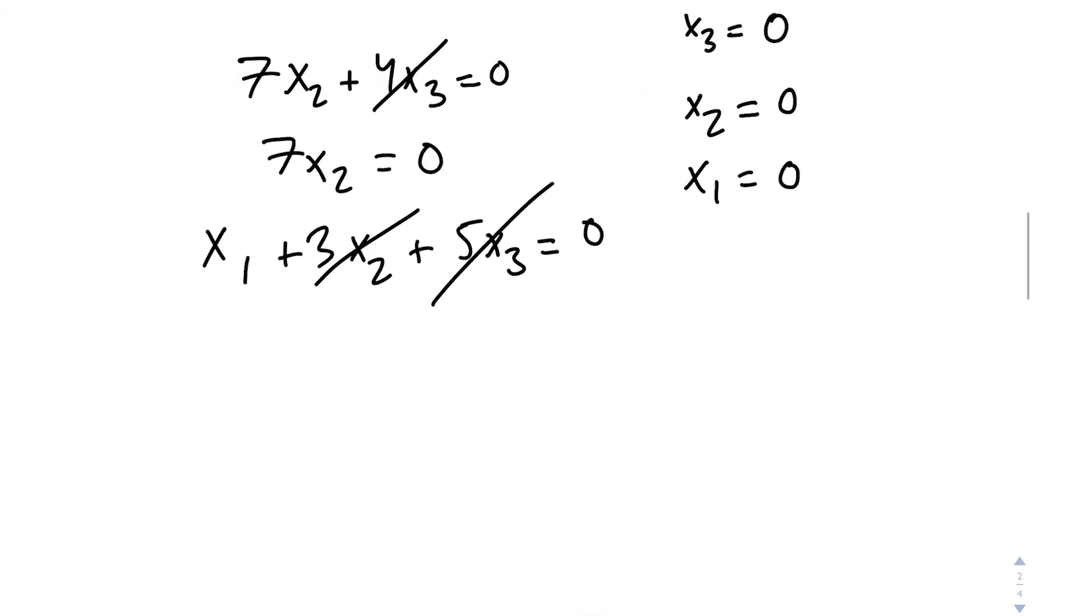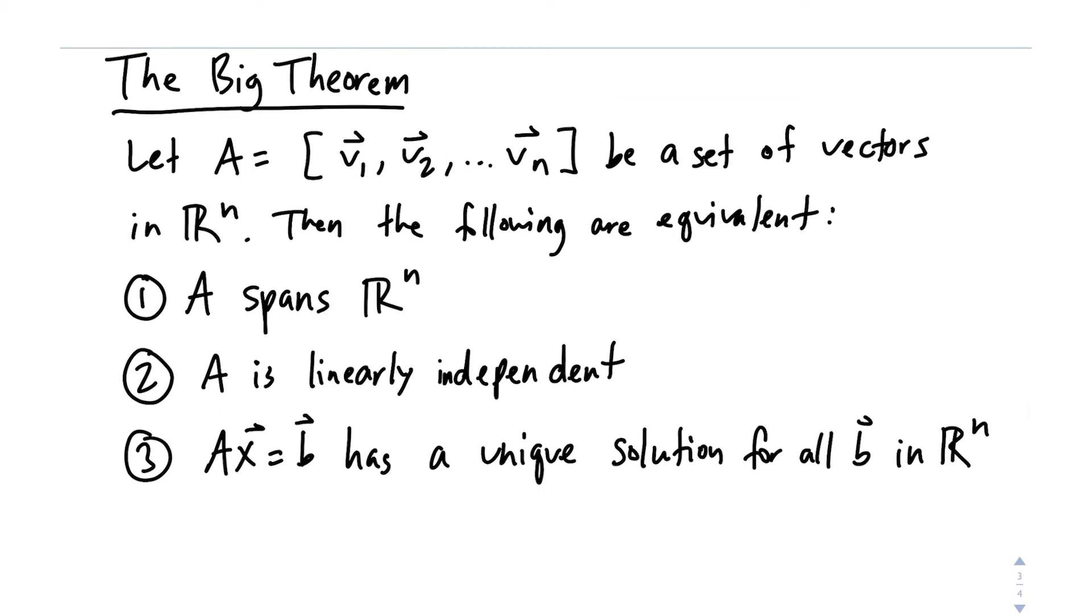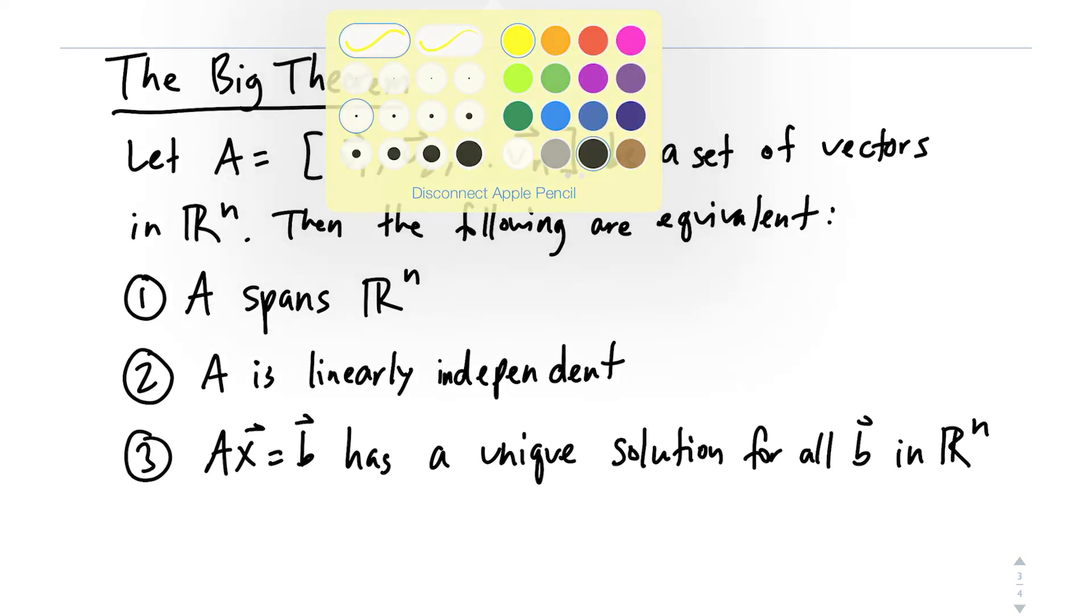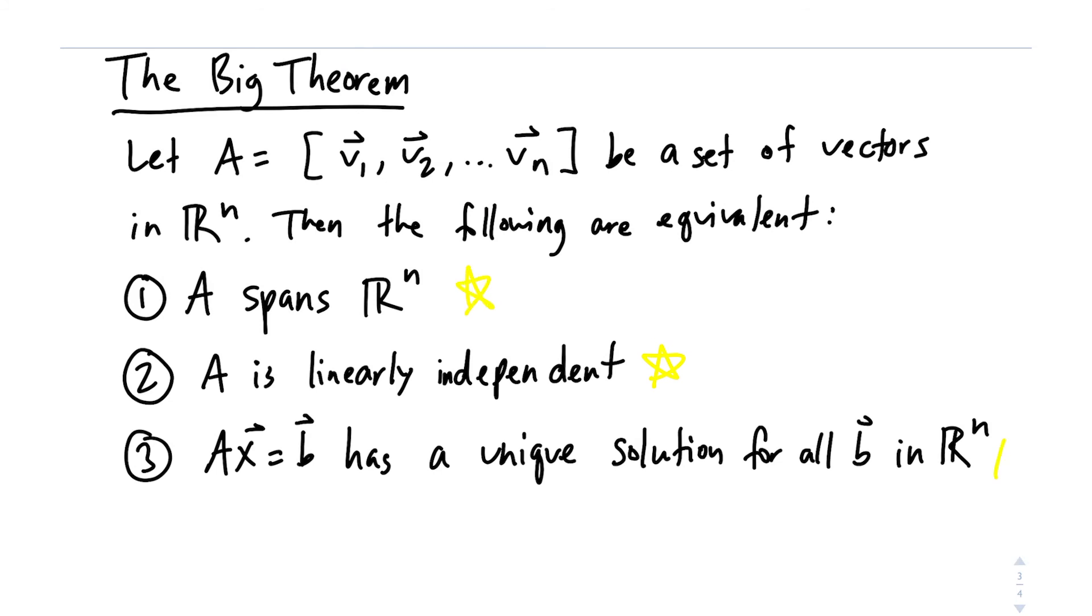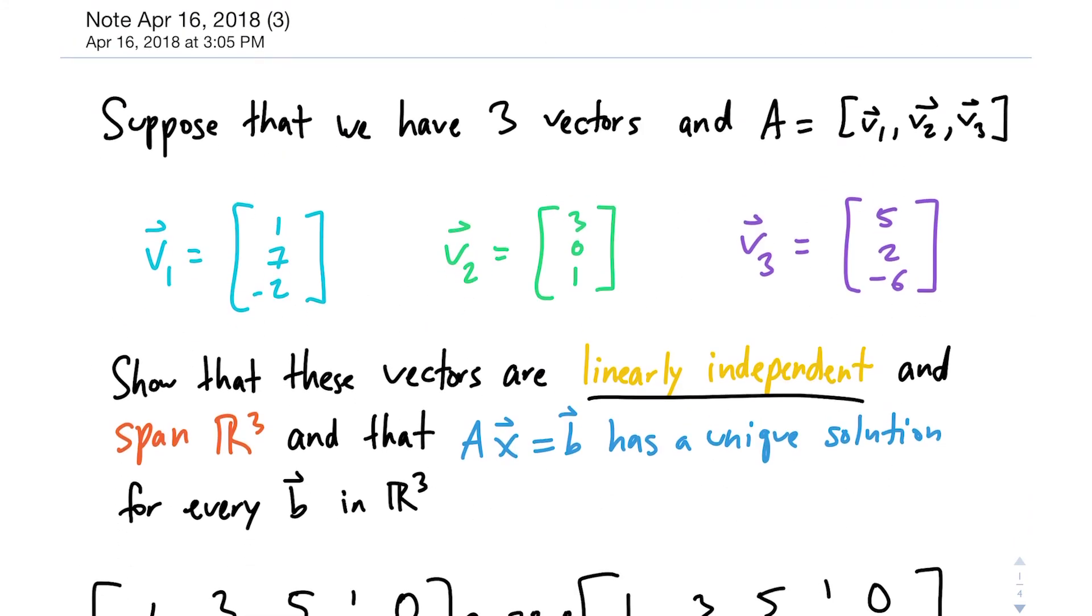And since we've determined that they're linearly independent, our big theorem, which finally came in clutch, we're finally coming back to her. We're saying that since this is true, this is also true, and that's also true. And a really important distinction to make here is that we need these two n's to be the same. So the number of vectors within our set should be the same as whatever R we're looking at. So in this example, we had three vectors, and we were looking at R³. So that's why we were able to use the big theorem.